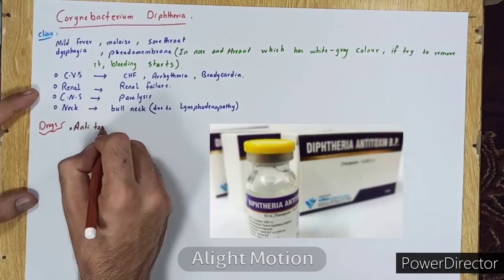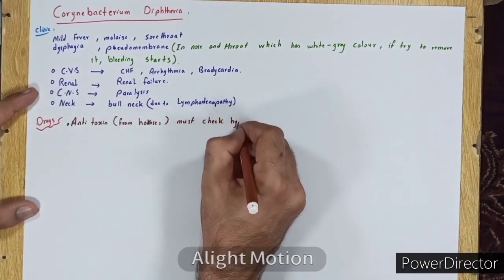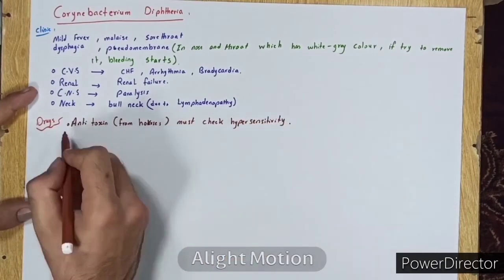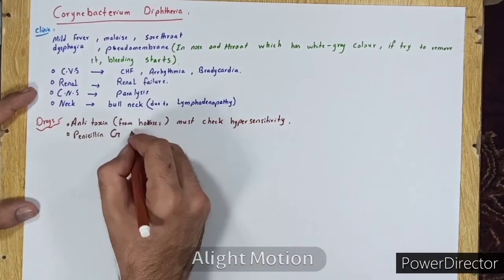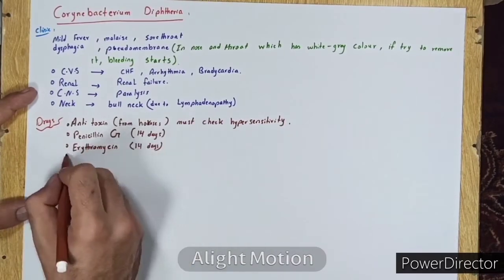Antitoxin from horses - we must check hypersensitivity before use. Penicillin G for 14 days. Erythromycin for 14 days.